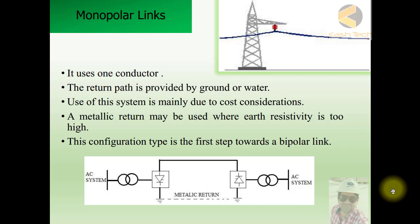And you know the power transmission needs basically always two conductors, one could be positive another could be negative. So power is transmitted through one conductor whereas the return path is provided by ground or water.